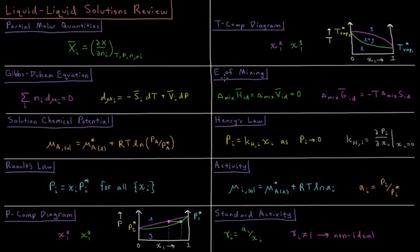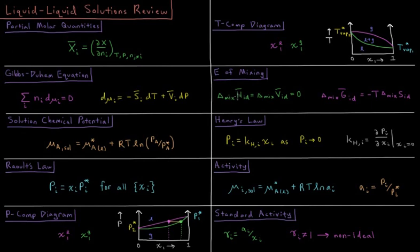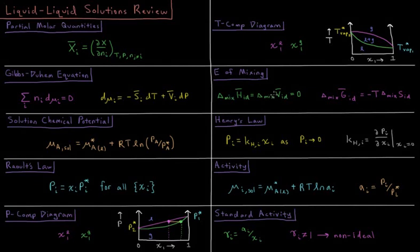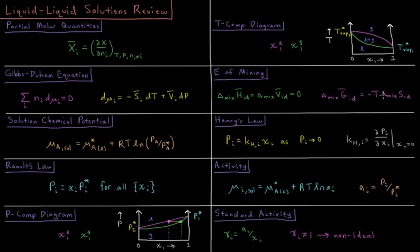The energy of mixing for ideal solutions is that there is no change in enthalpy since there's no difference in interactions for ideal solutions and there's no change in molar volume in ideal mixing because the particles are going to continue to take up the same amount of space relative to one another. So the Gibbs energy change during ideal mixing is the negative temperature times the entropy change during that mixing.